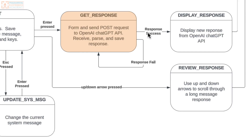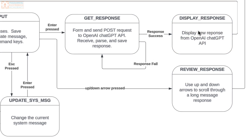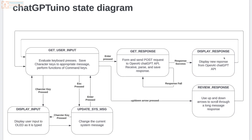If the response succeeds, we move on to 'display response.' The system displays the response received from the ChatGPT API to the OLED. So if you asked 'which side do I butter my bread?' and it comes back with 'you butter the top side, of course,' that message is what gets shown on the OLED. After displaying the response, we immediately go back to the 'get user input' state.